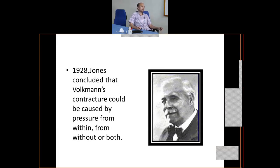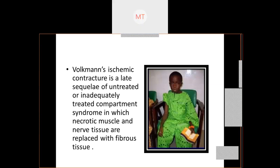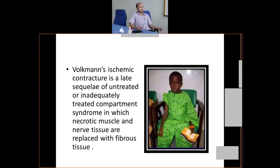Volkman's Ischemic Contracture can be caused by pressure from within, from without, or both. It is a late sequel of untreated or inadequately treated compartment syndrome in which necrotic muscle and nerve tissue are replaced with fibrous tissue. Ischemia → necrosis → inflammatory response → increased compartment pressure left untreated → Volkman's Ischemic Contracture.